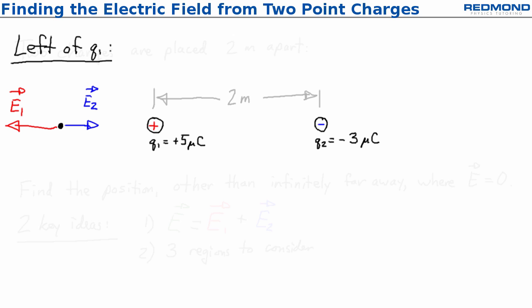The net electric field E is E1 plus E2 in vector form. E1 and E2 are in opposite directions, so in terms of magnitudes the magnitude of the electric field E is equal to E1 minus E2.